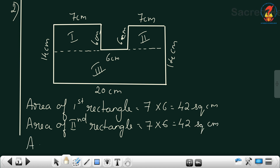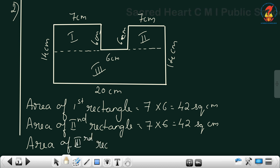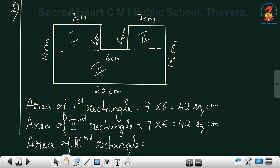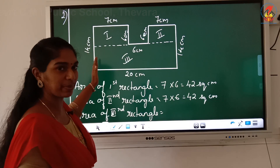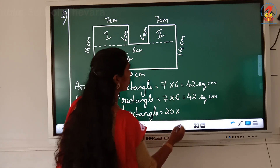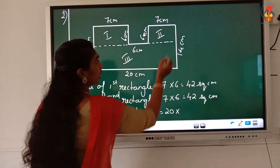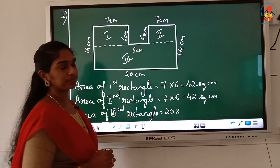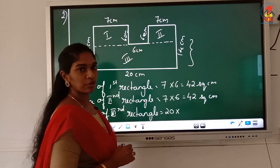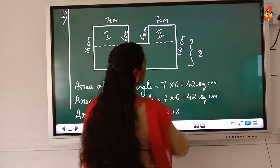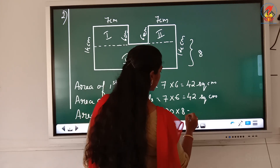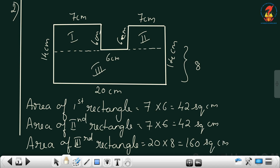Now moving on to the third rectangle. Here you can see this is the length and this is the breadth, but you have to find out how much is the breadth. The length is 20. From here till here it is 6, and the whole length is 14. So 14 minus 6 is equal to 8. So you got the breadth. So 20 into 8 is equal to 160 square centimeter.